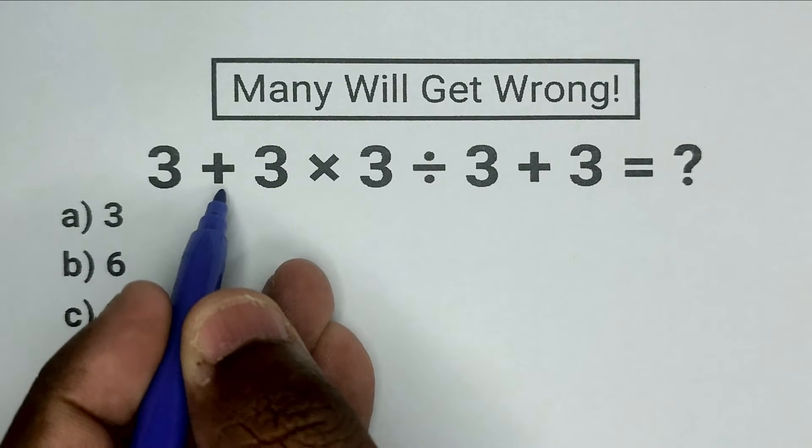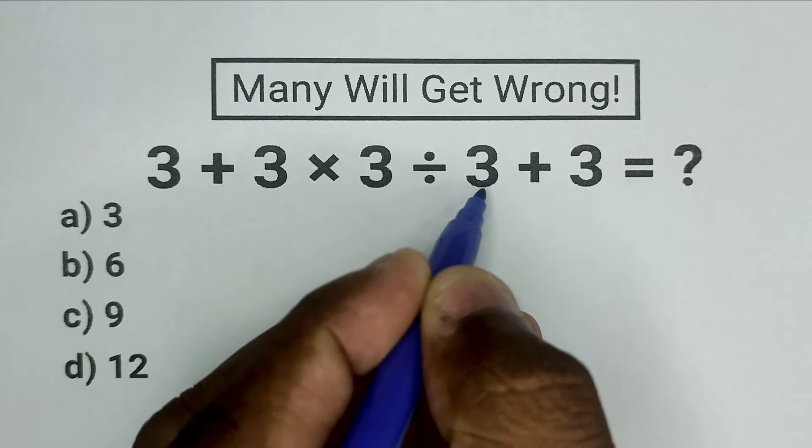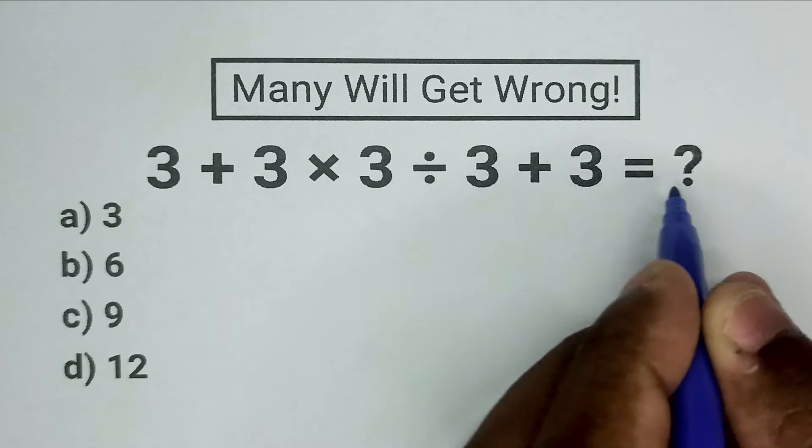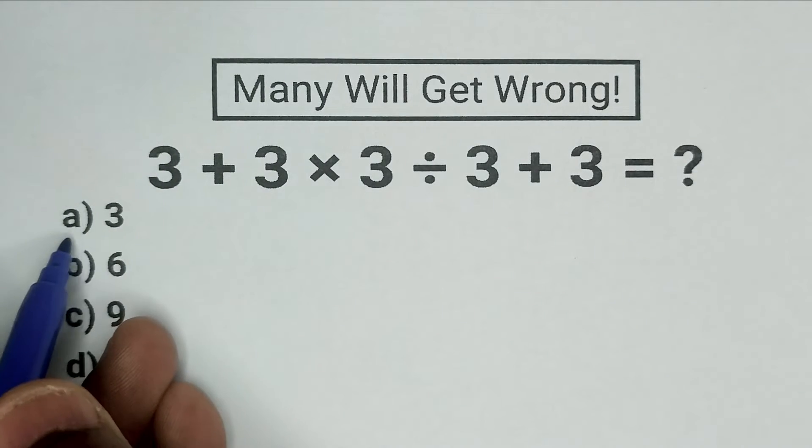The problem is 3 plus 3 times 3 divided by 3 plus 3. Which is the correct answer? There are four options.